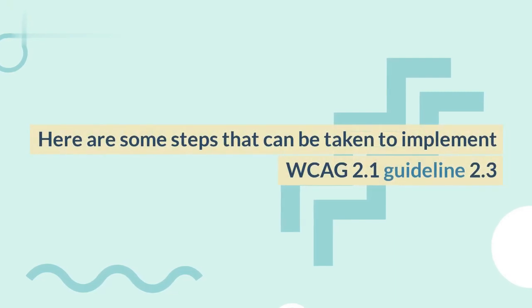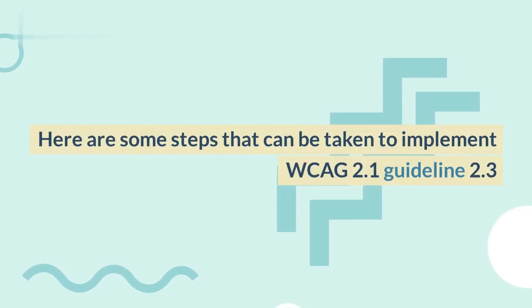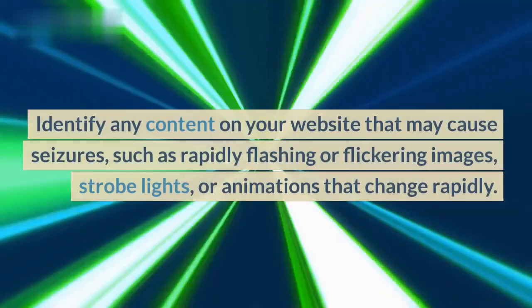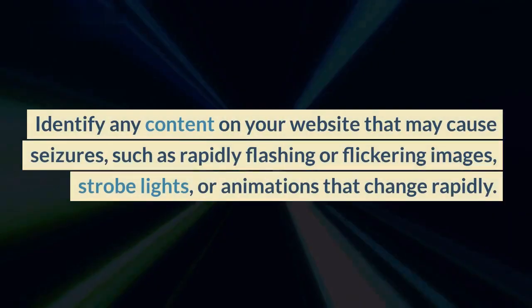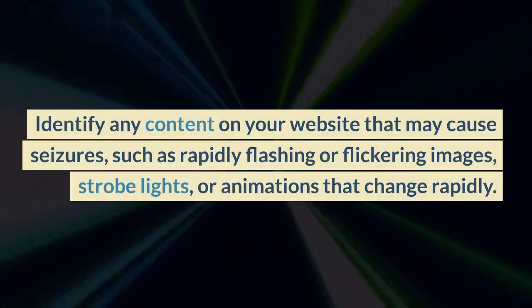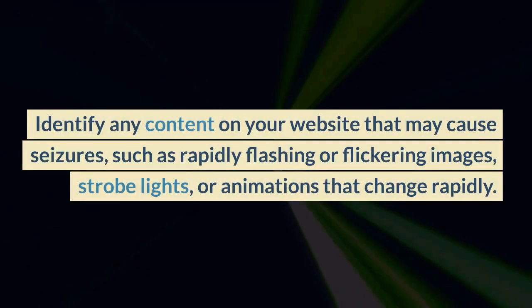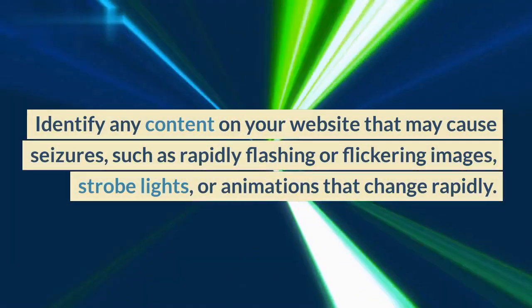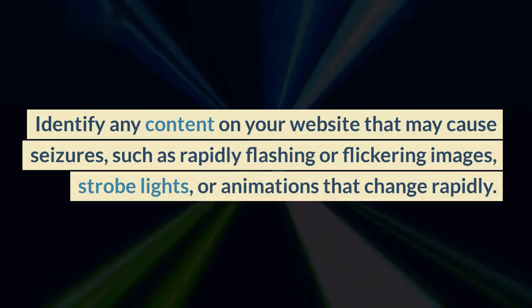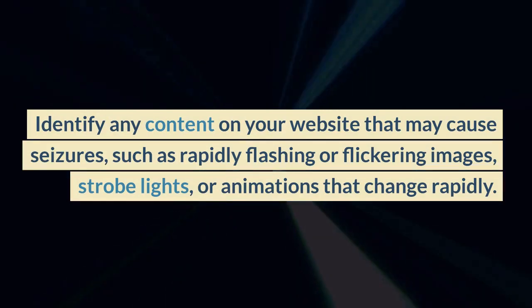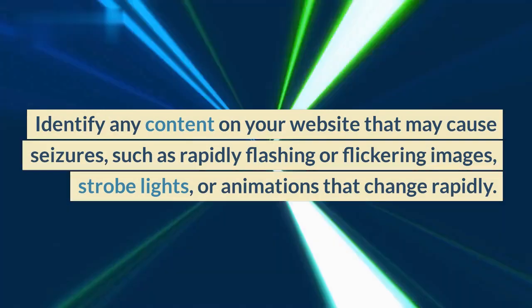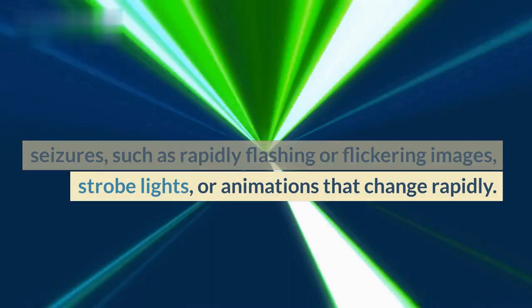Here are some steps that can be taken to implement WCAG 2.1 Guideline 2.3. Identify any content on your website that may cause seizures, such as rapidly flashing or flickering images, strobe lights, or animations that change rapidly.